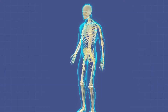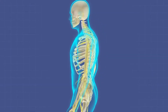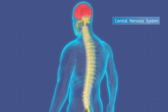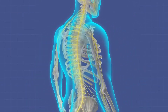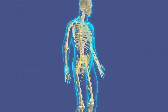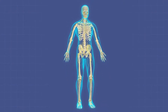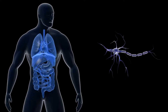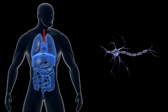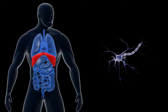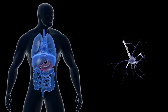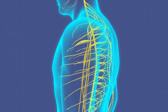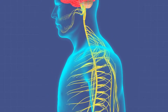Visceral motor neurons in the central nervous system send axons called preganglionic fibers to synapse on ganglionic neurons, whose cell bodies are located in autonomic ganglia located outside of the central nervous system. The axon of the ganglionic neuron is a postganglionic fiber that innervates peripheral organs.